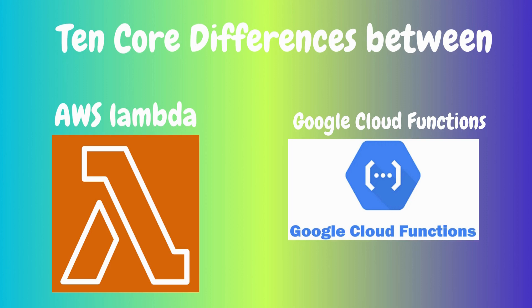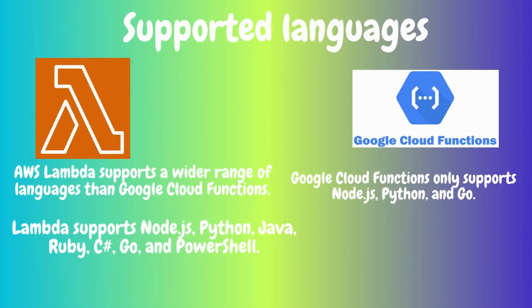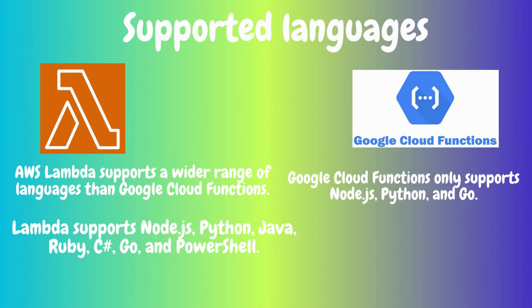The first point we're going to discuss is supported languages. AWS Lambda supports a wider range of languages than Google Cloud Functions. Lambda supports Node.js, Python, Java, Ruby, C#, Go, and PowerShell. Google Cloud Functions supports Node.js, Python, and Go. So if you're developing a serverless application in a language not supported by Google Cloud Functions, you'll need to use AWS Lambda.